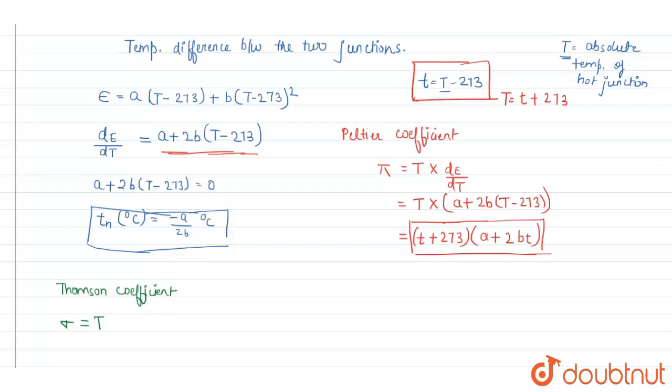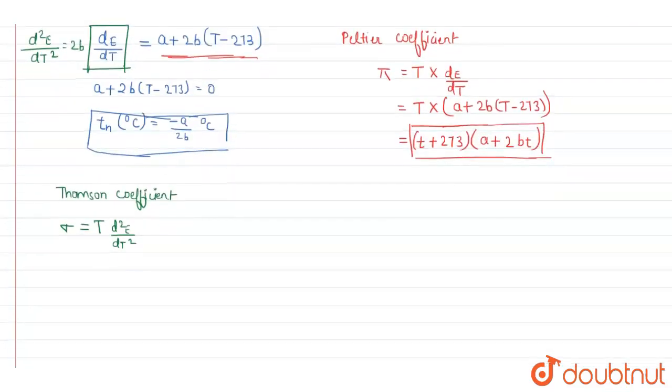We will double differentiate this formula. That will be d squared e upon dt whole square, and that will be 2b. So now here this will be T into 2b.